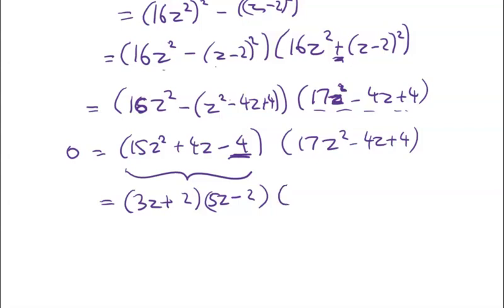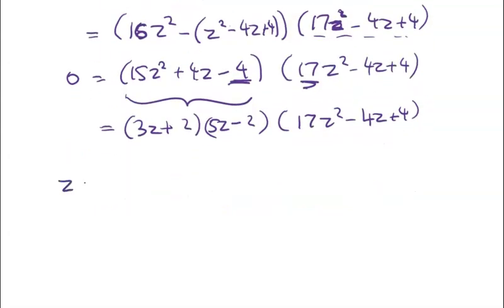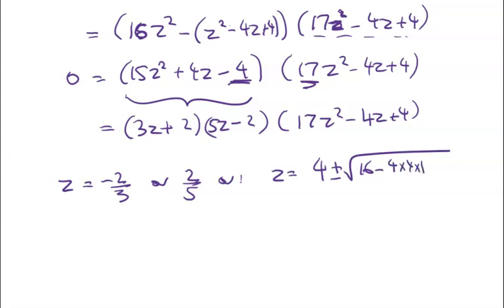And then this one I'm going to do quadratic formula to I think. I can't be bothered doing completing the square because it's got a 17. So this gives me straight away z is equal to negative 2 thirds or 2 fifths or z is equal to negative b. So 4 plus or minus the square root of 16 minus 4 times 4 times 17. Yuck. over 34.